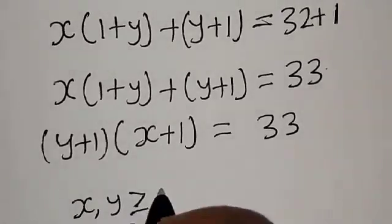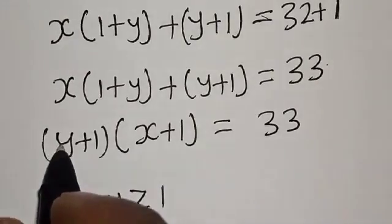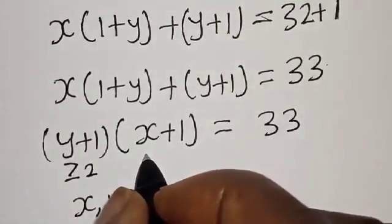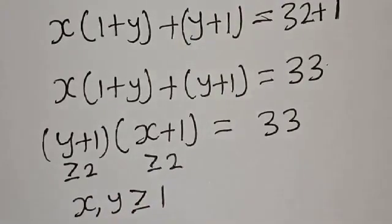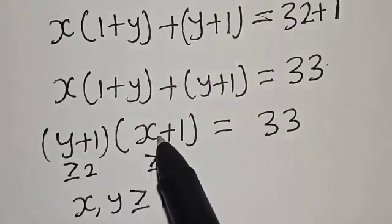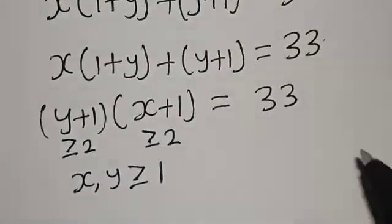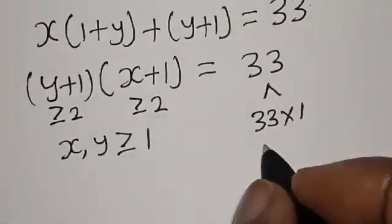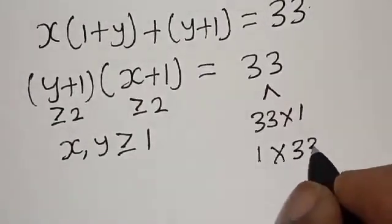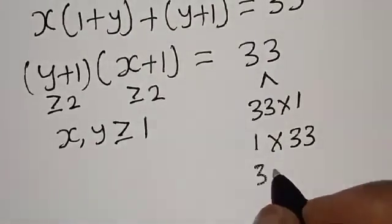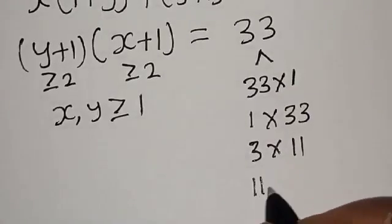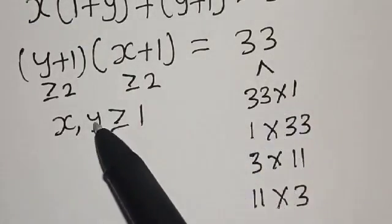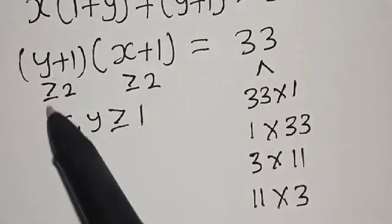Remember that x and y are positive integers, so x, y are greater than or equal to 1. That means y plus 1 is greater than or equal to 2, and x plus 1 is greater than or equal to 2. Now 33 can be written as 1 times 33, or 3 times 11, or 11 times 3.